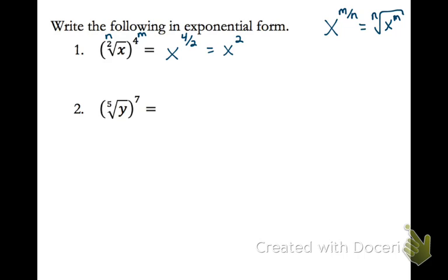For number 2, same idea. The 5 is our n, the 7 is our m. Our base is y because that's what's in the radical. And we have y to the 7 over 5. Now we can't simplify that — 7 fifths doesn't simplify — so we're just done.